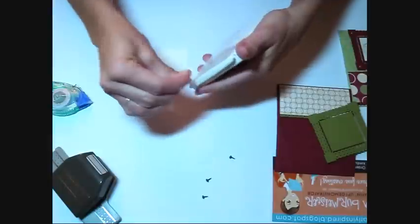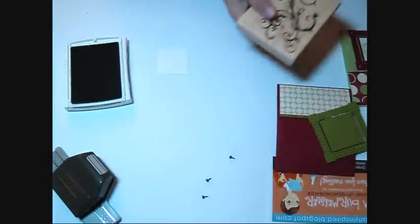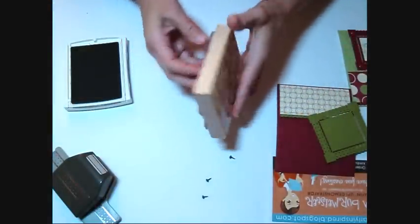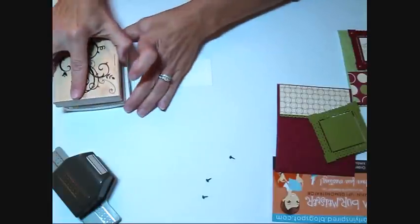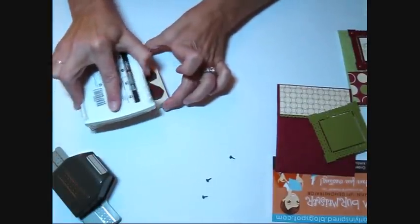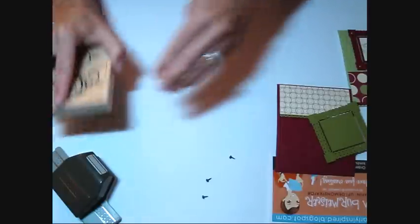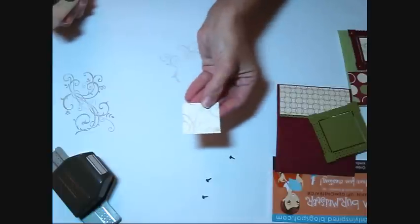I'm using crumb cake ink with the Baroque motifs swirl. I really like this. I'm just going to ink this up. I'm going to do it the opposite way. And I'm going to do a 2nd generation stamp where I stamp it off once. And then I'm going to stamp it on my card. Like so. So it's not so dark.